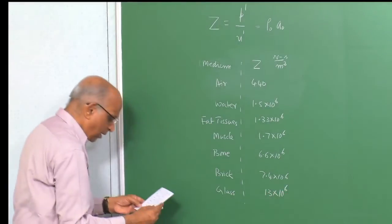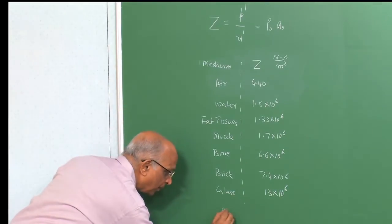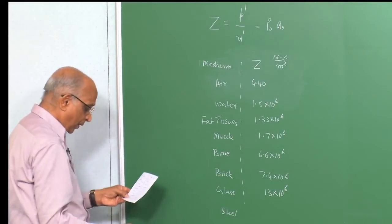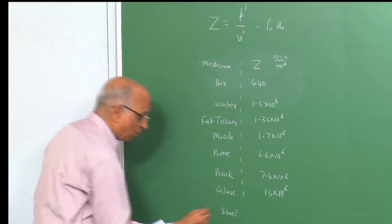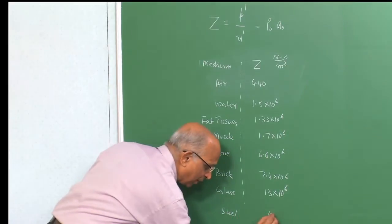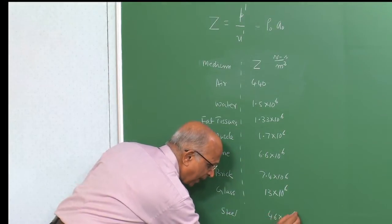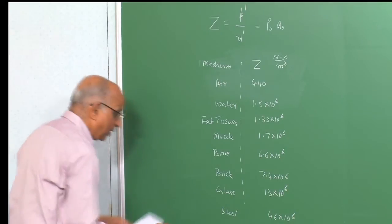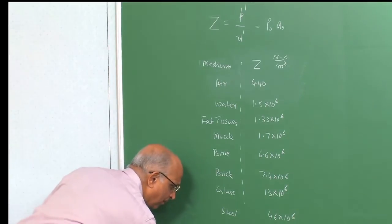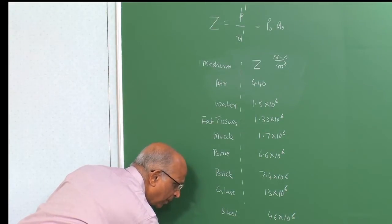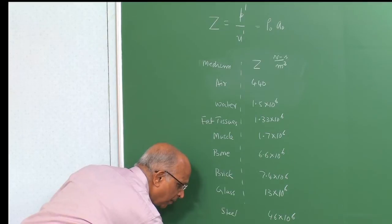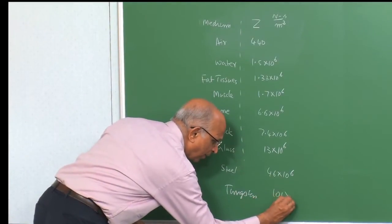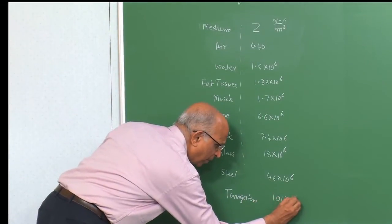For steel, which is very much harder than brick, the value is around 46 × 10⁶ N·s/m³. For a hard material like tungsten, the value is around 101 × 10⁶ N·s/m³.